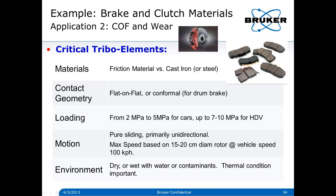When we screen materials, we want to make sure we're representative so we're sampling the typical microstructure of something as inhomogeneous as a brake or clutch material. We can compare a number of materials in the lab and see how they perform in friction and wear. Our materials are friction material — usually versus cast iron, in some cases versus steel. The geometry is either flat-on-flat or conformal, but flat-on-flat is much easier to run. Loading from colleagues in the brake field ranges from 2 to 5 megapascals for cars, and 7 to 10 megapascals for big trucks and heavy-duty vehicles.